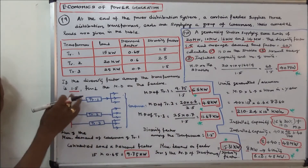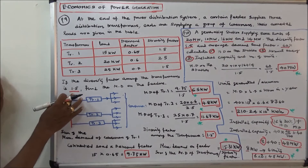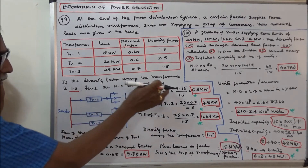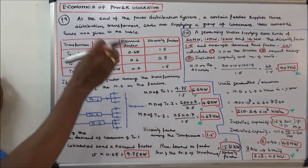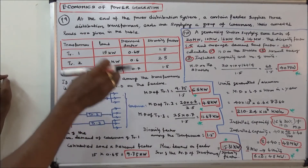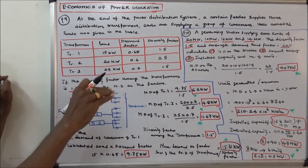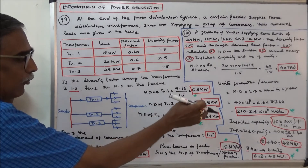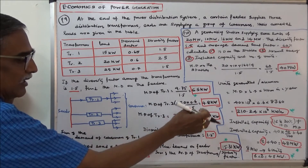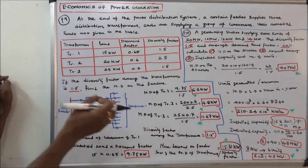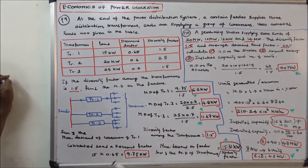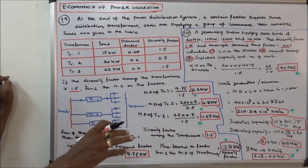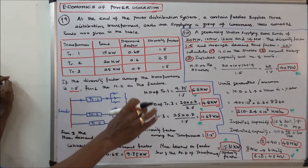The diversity factor among the transformers is given as 1.5. Therefore, the maximum demand on the feeder equals the sum of the maximum demands of the transformers divided by the diversity factor: 6.5 plus 4.8 plus 11.67, divided by 1.5, equals 15.31 kilowatts. That is the maximum demand on the feeder.